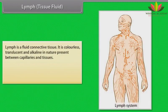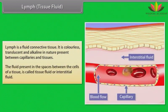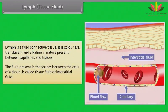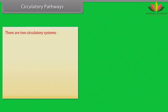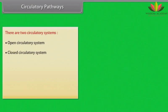Lymph is a fluid connective tissue — colorless, translucent, and alkaline in nature — present between capillaries and tissues. The fluid present in the spaces between the cells of a tissue is called tissue fluid or interstitial fluid. There are two circulatory systems: open circulatory system and closed circulatory system.